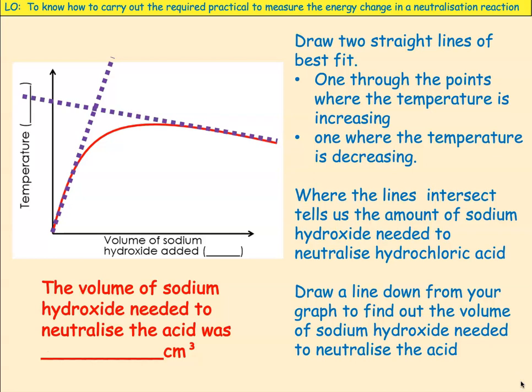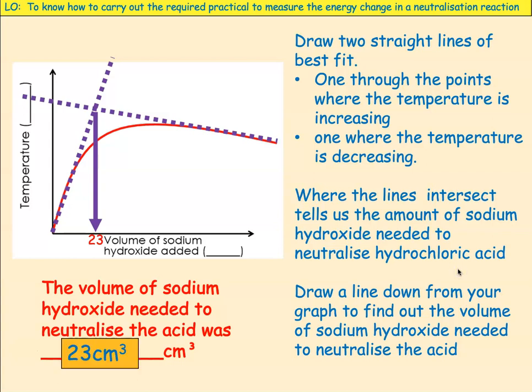Where the lines intersect — if we go down to the x-axis — it tells you exactly the volume of sodium hydroxide needed to neutralise the hydrochloric acid. Draw a line down from your graph to find that volume. From where I drew it, I found it to be 23 cm³.